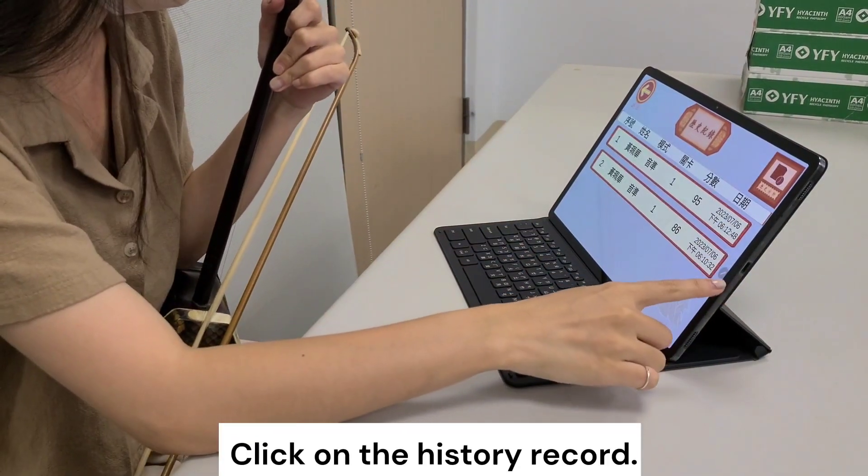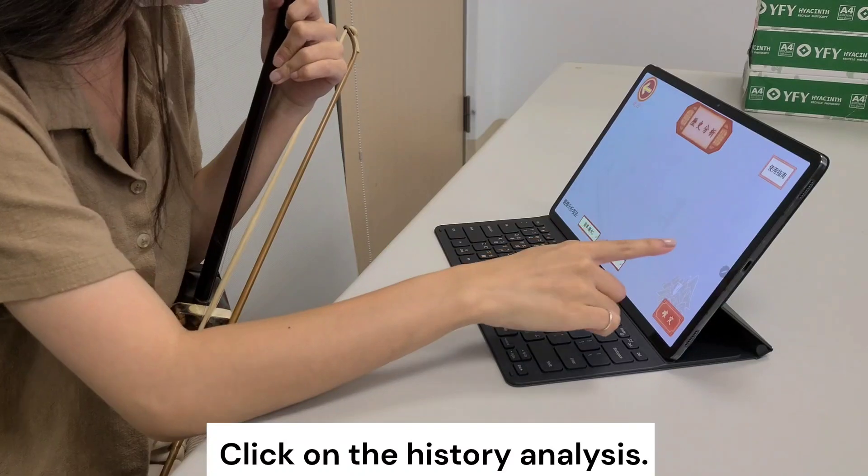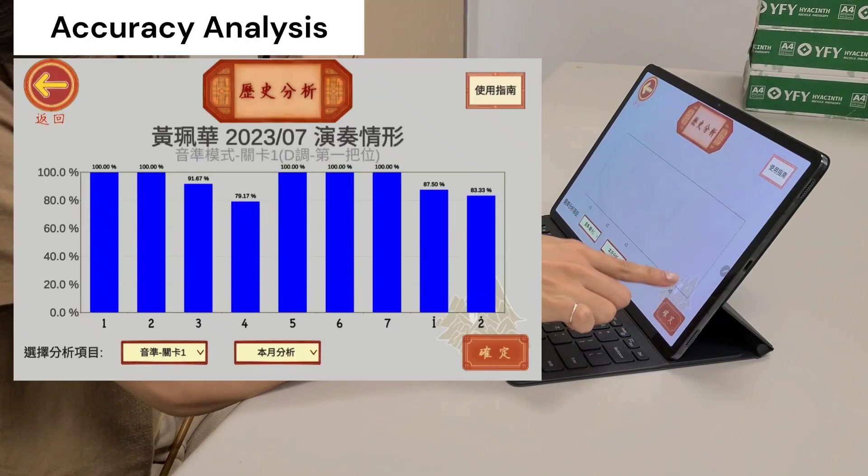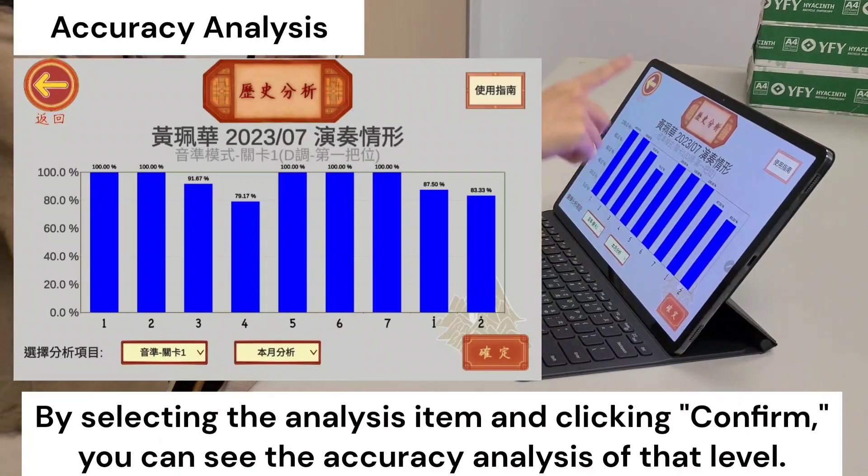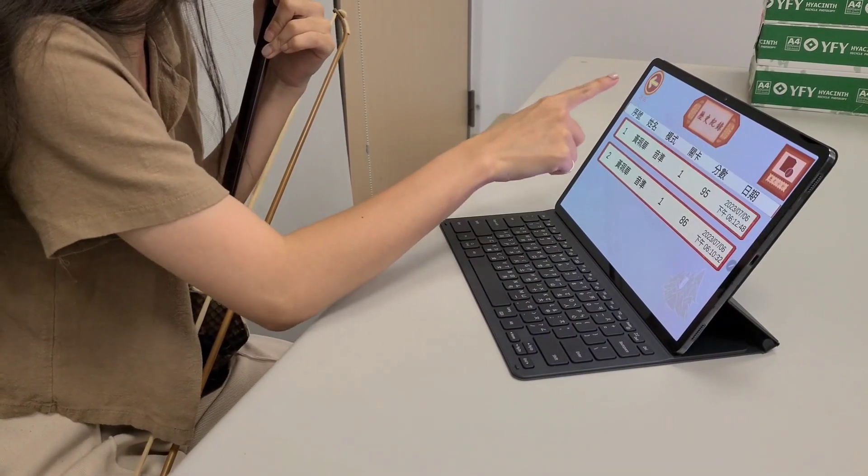Click on the history record. Click on the history analysis. By selecting the analysis item and clicking confirm, you can see the accuracy analysis of that level.